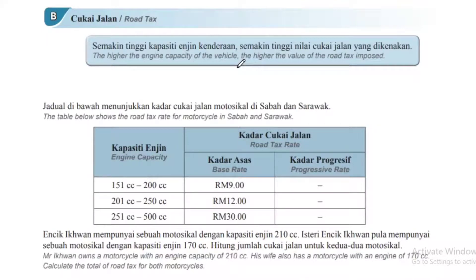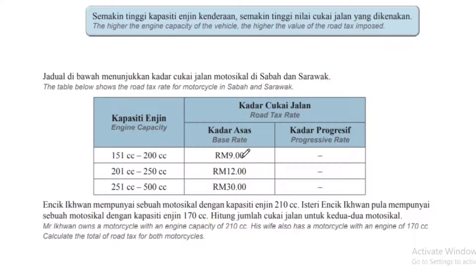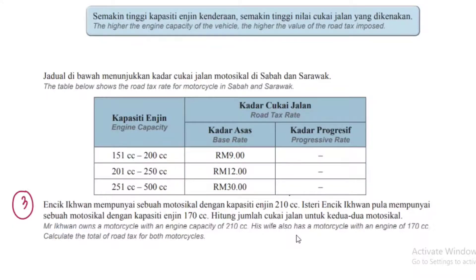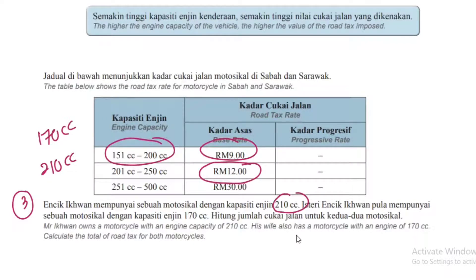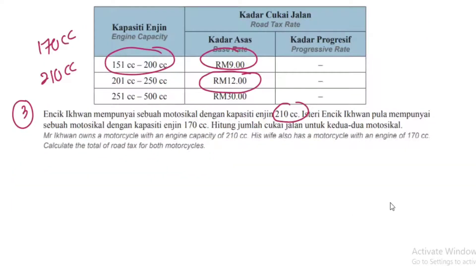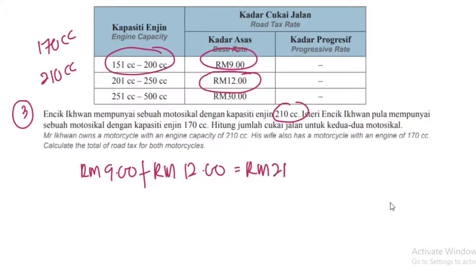Cukai jalan ni mudah — rolet. Kita rujuk jadual Kapasiti Enjin, lepas tu kita kira kadar asas dia. Soalan ketiga: Encik Kuan mempunyai motosikal kapasiti 210cc, dan isteri mempunyai motosikal 170cc. Rujuk jadual — 210cc duduk kat sini, 170cc dalam lingkungan ni. Hitung jumlah cukai jalan: RM9 tambah dengan RM12 = RM21. Senang — cukai jalan ni senang.